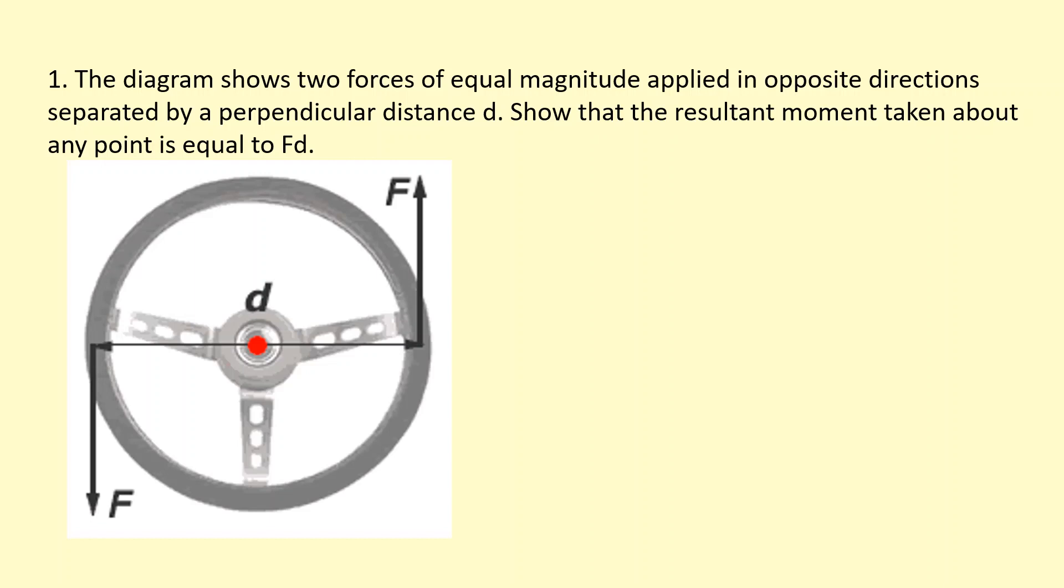The diagram shows two forces of equal magnitude applied in opposite directions separated by a perpendicular distance d. Show that the resultant moment taken about any point is equal to F times d.